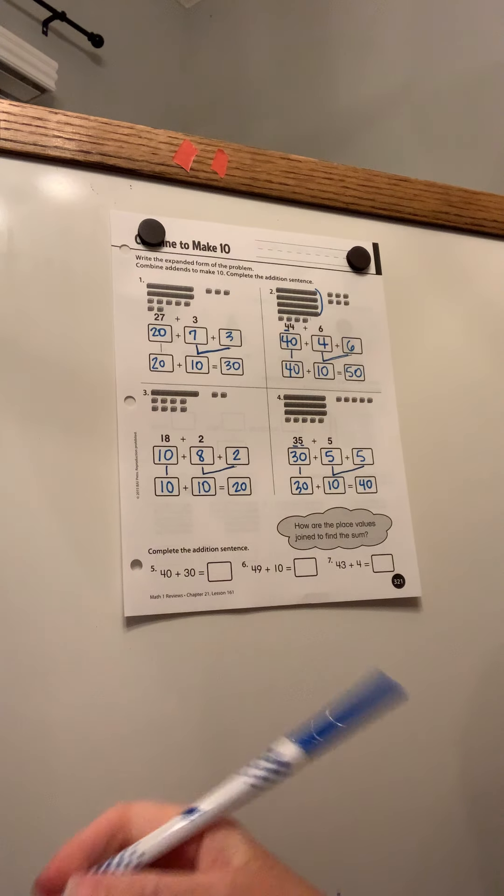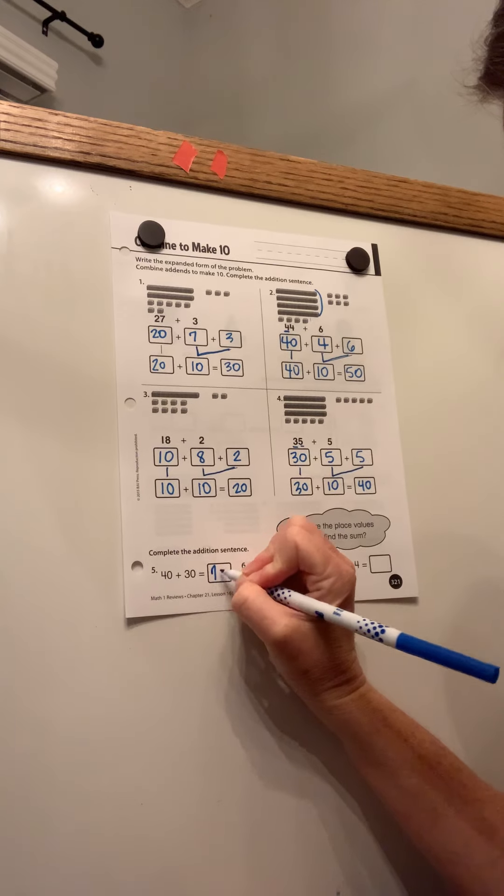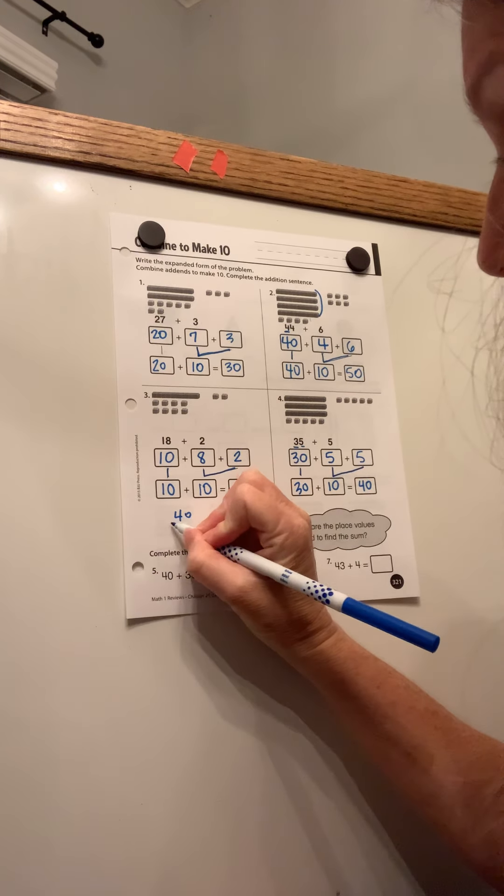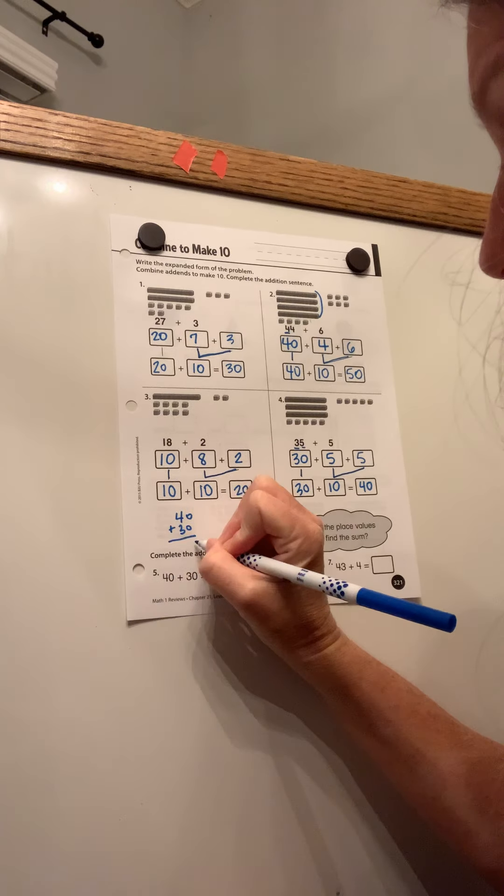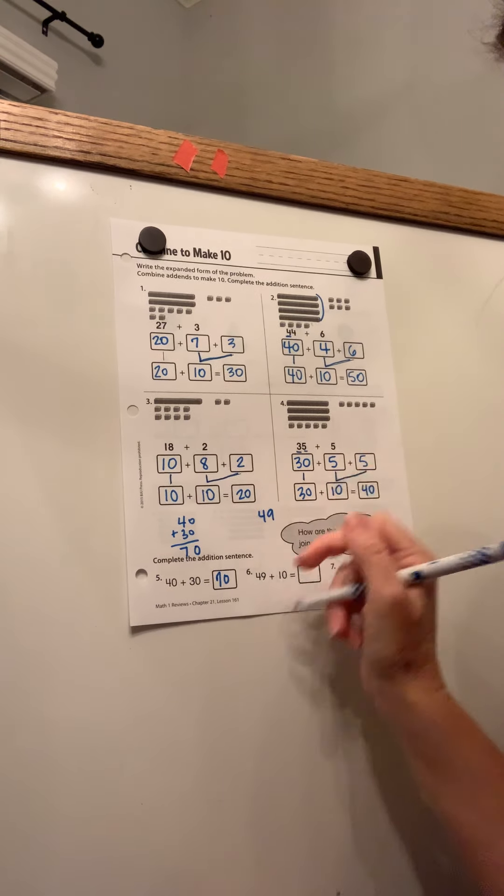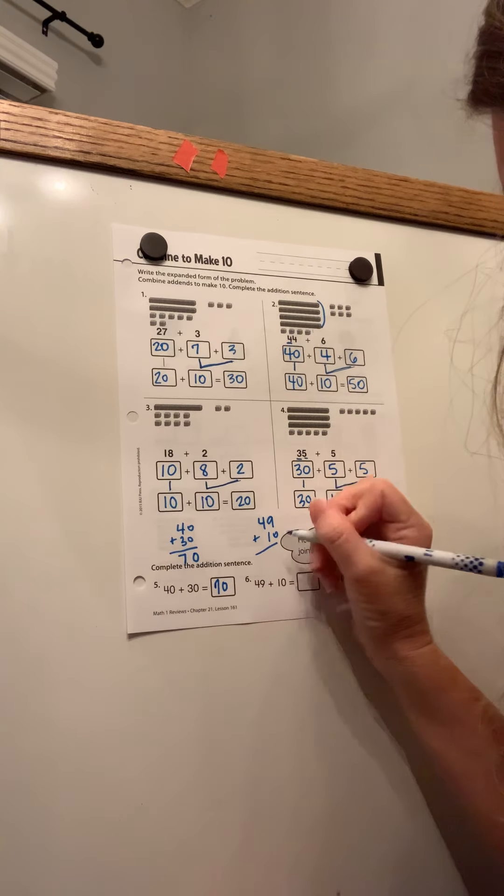Okay. And down here is just practice. 40 plus 30 would be 70. If you need to, and I've told you this in class, if you need to write the problem up and down, do that. Don't try to guess. Okay. If I need to write this problem up and down in order to solve it, do that. Okay. 59 is 59.